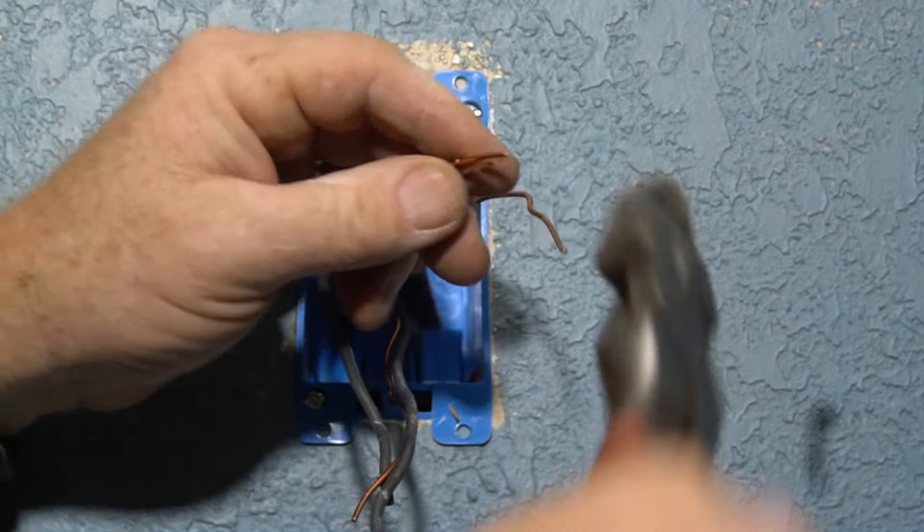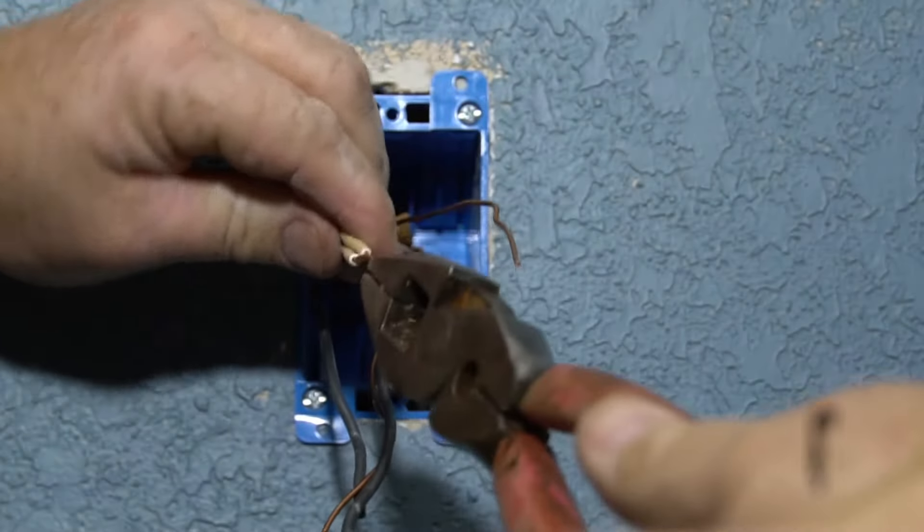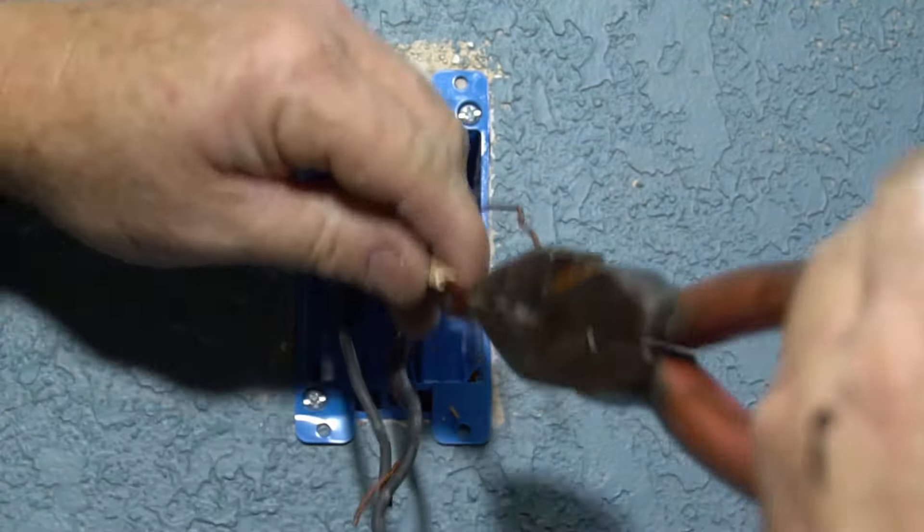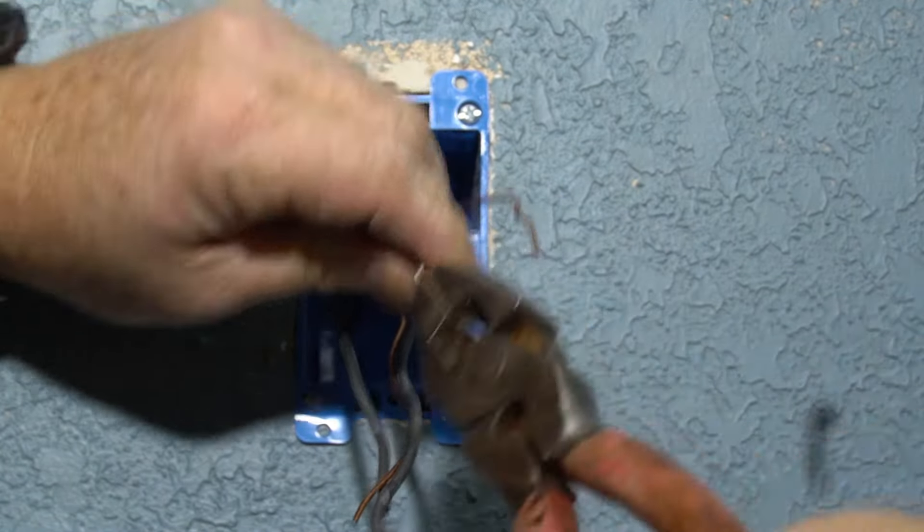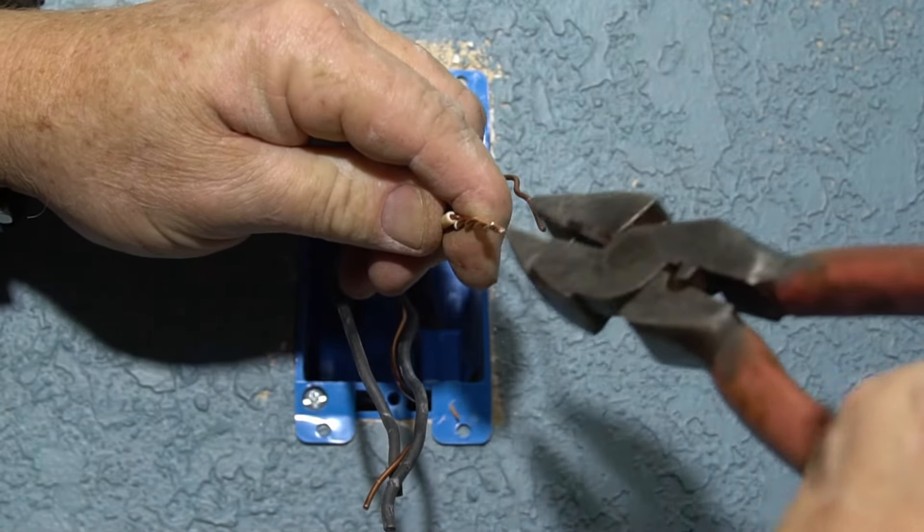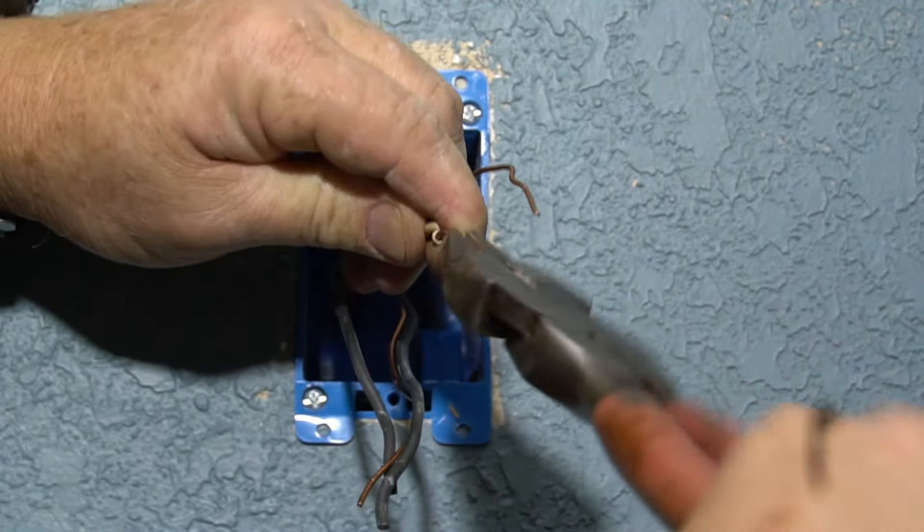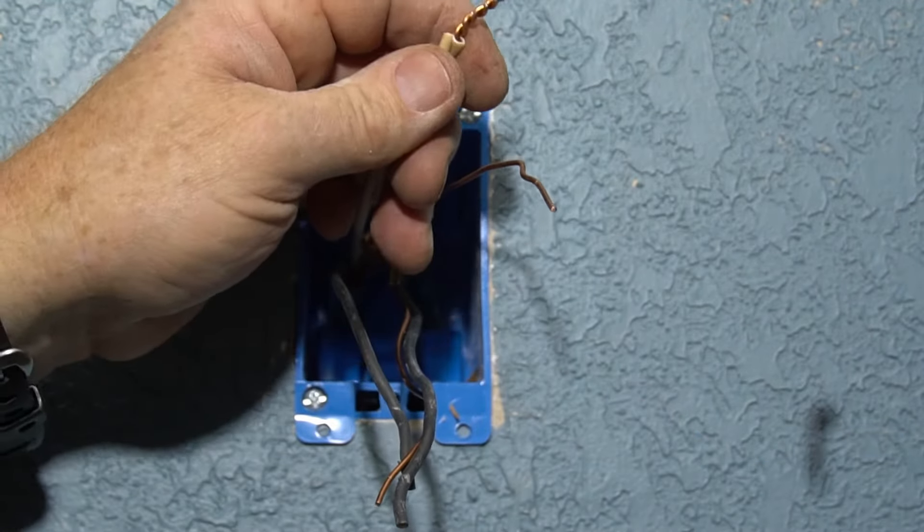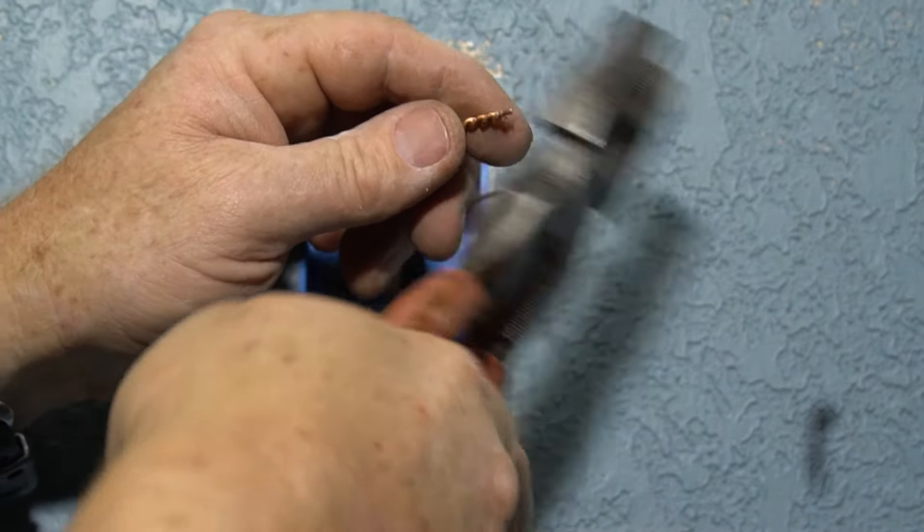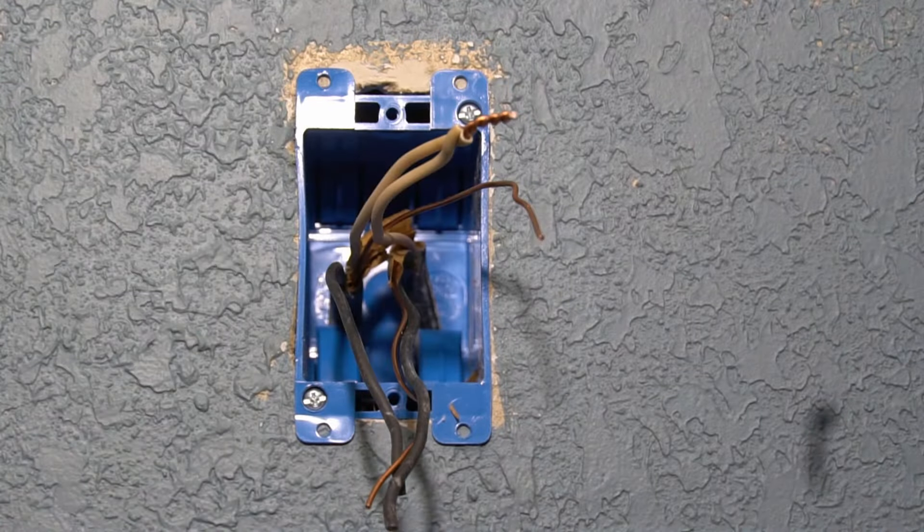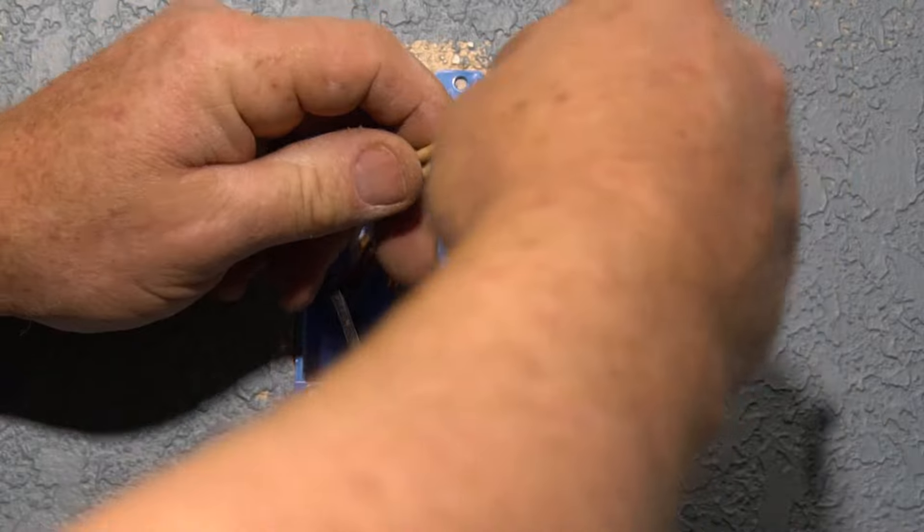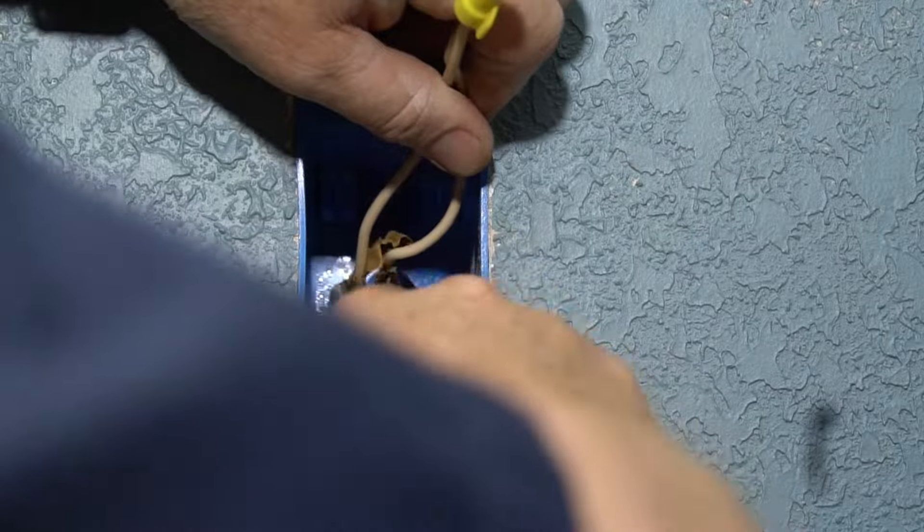Take my linesman pliers here and going clockwise, you want to twist these things together really good because you want to make sure you have a good neutral contact. Okay, get you several good wraps where it's real tight like that, trim off the end. Because this is 14 gauge wire, I'm going to be using a yellow wire nut and screw that baby down on there like so. Okay, so now that we've got the neutrals wired together...